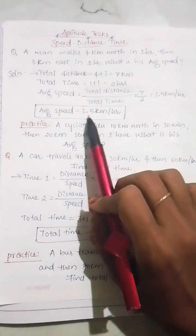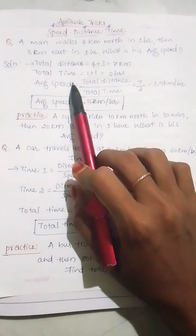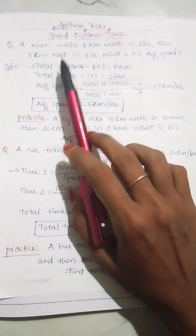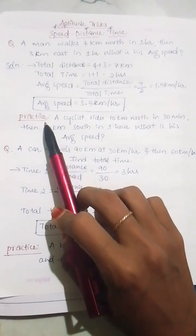A man walked at 3.5 km per hour. If you found this simple, then subscribe to my channel for more aptitude tricks and tips. And I have a practice question for you.